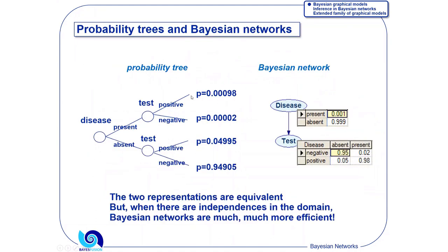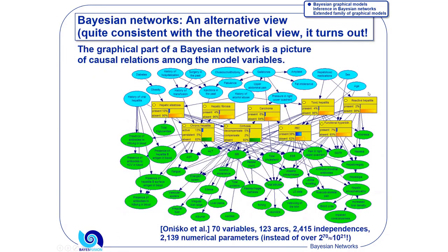Bayesian networks, the way I presented them, are equivalent to probability trees. That's just another graphical way of representing joint distributions. But they are much, much more efficient. I told you that with just 20 variables, I would need a million parameters. Here, we have 70 variables. This is a practical model, modeling different diseases of the liver.